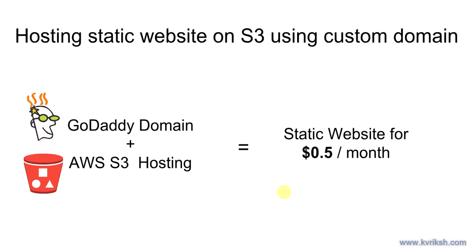Hi all, this is Chetan from Kavrix Technologies. In this video we're going to see how to host a static website on S3 using a custom domain name. We can host static websites on S3 and AWS gives us 5 GB of free space on S3 for lifetime. So effectively you can host your website for free on S3, but when we do that we get an AWS-provided domain name. In real life we would require our own website with our own domain name, and that's where this video shows how to do that.